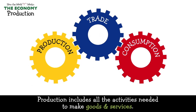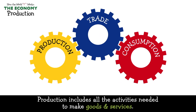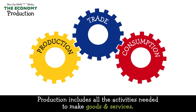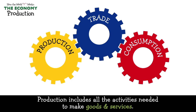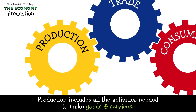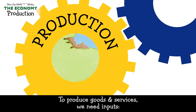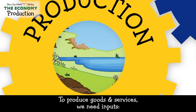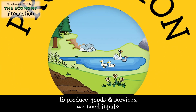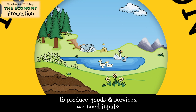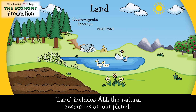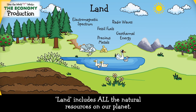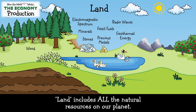Production includes all the activities needed to make goods and services. To produce goods and services we need inputs. Land includes all the natural resources on our planet.